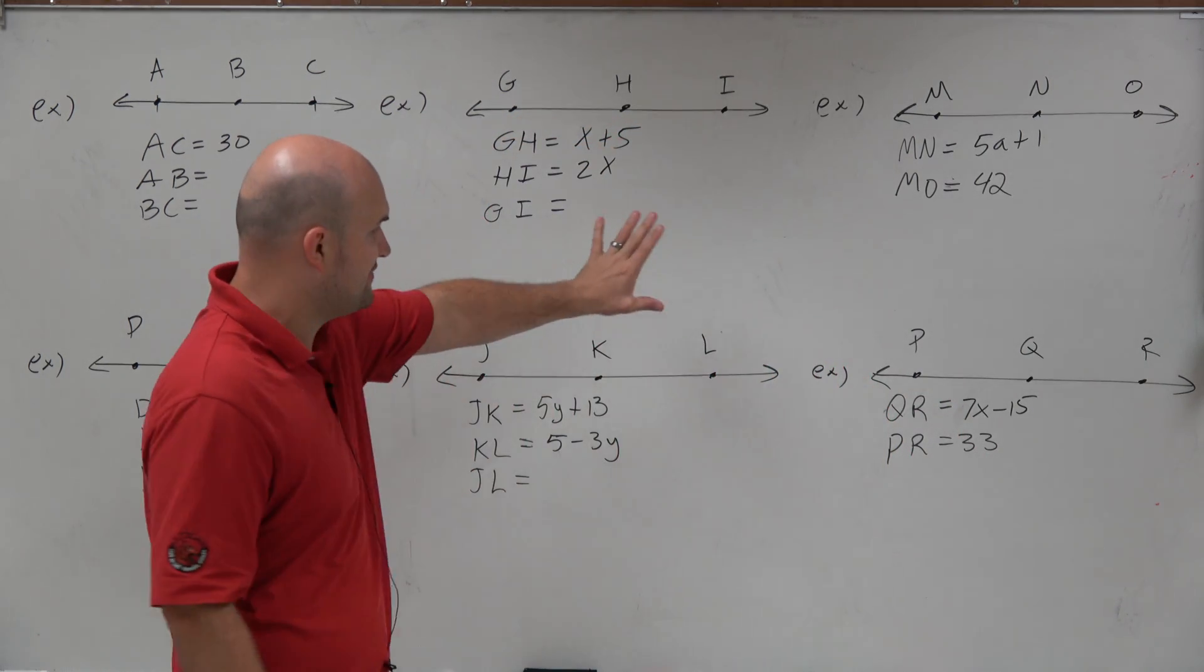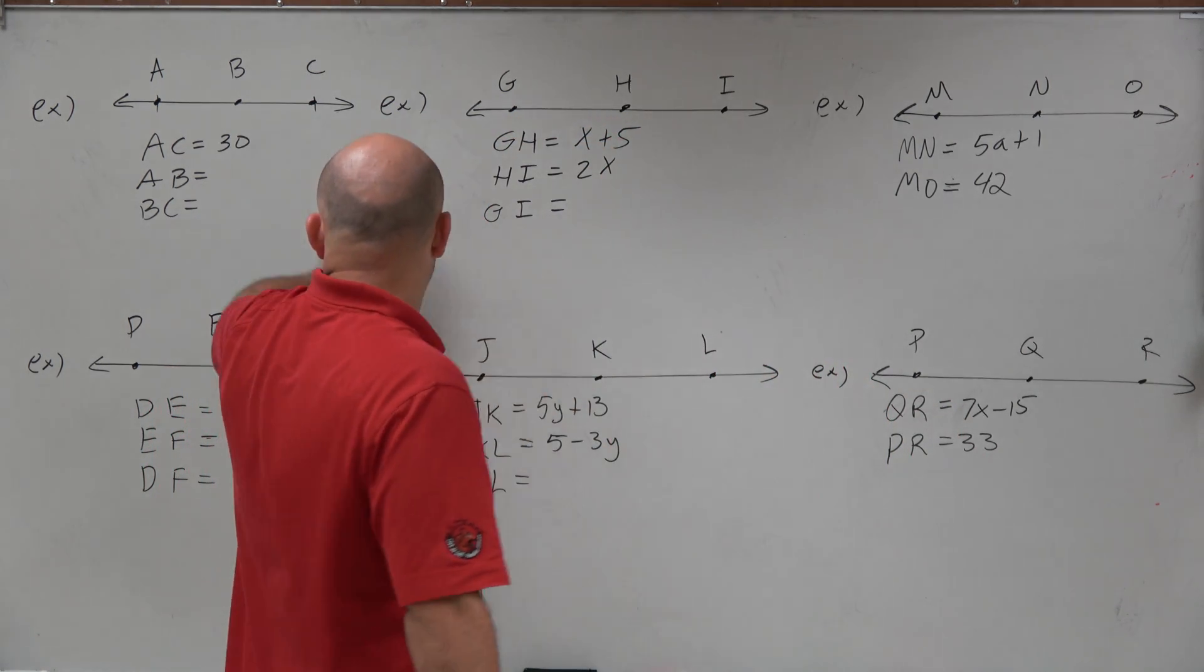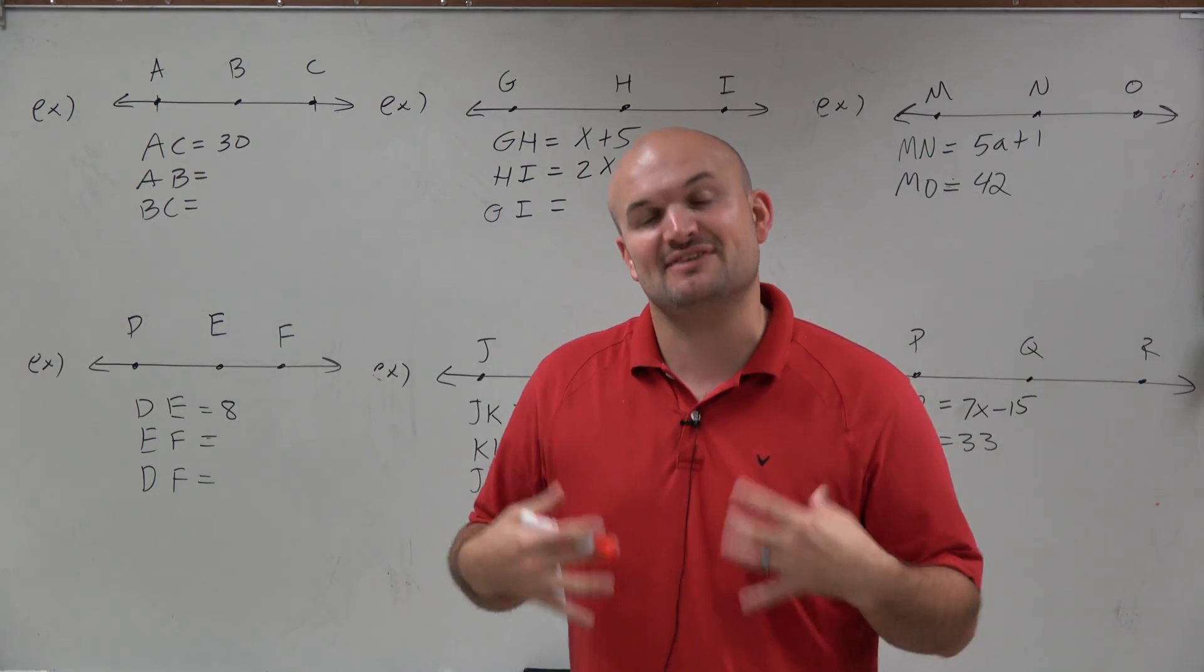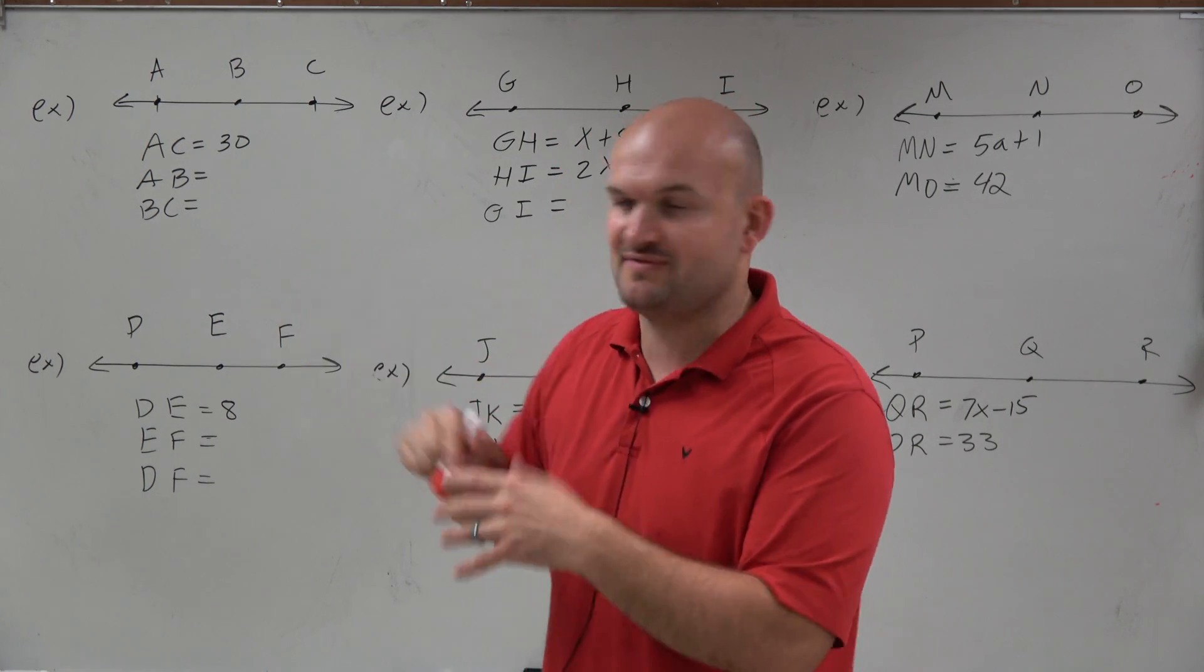You can see here in a couple of these examples, we have these variables x, y, a. Over here we don't, but we have some missing lengths. So we're going to use the idea of the midpoint to find our missing length or missing variable to help us find the length.